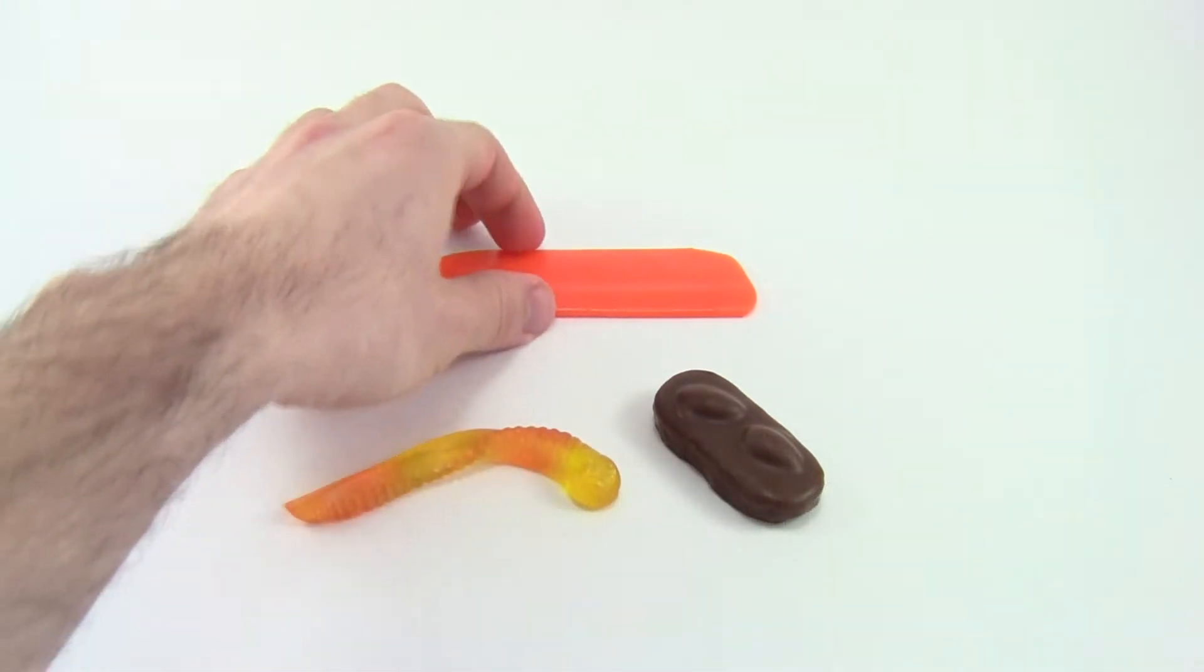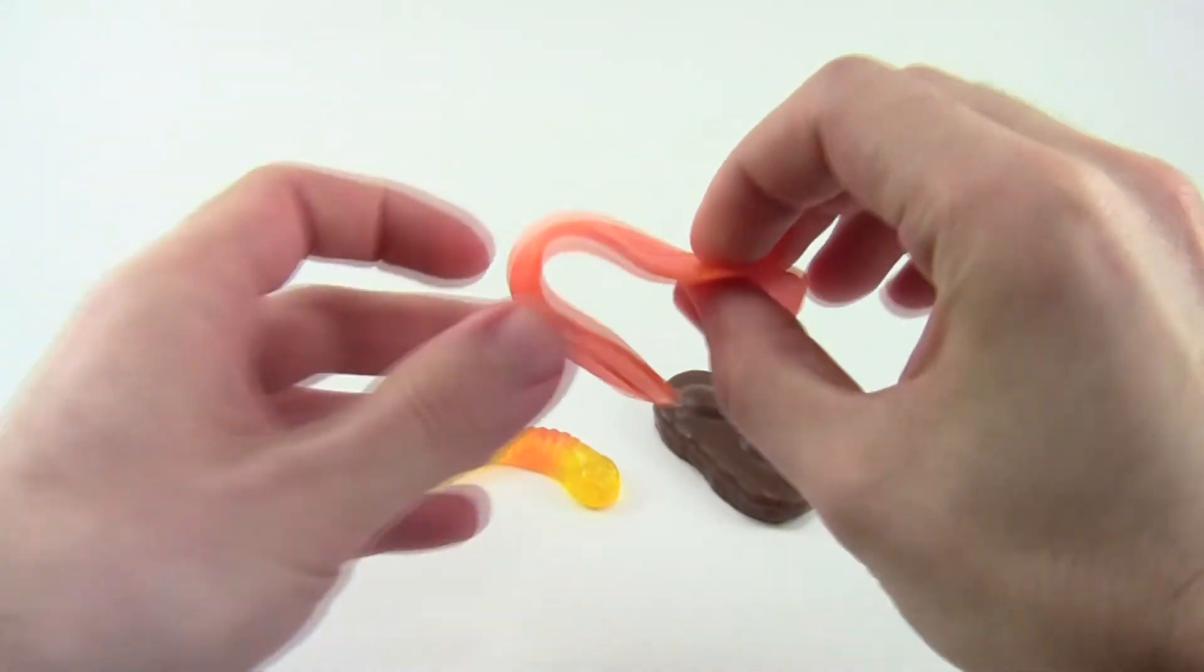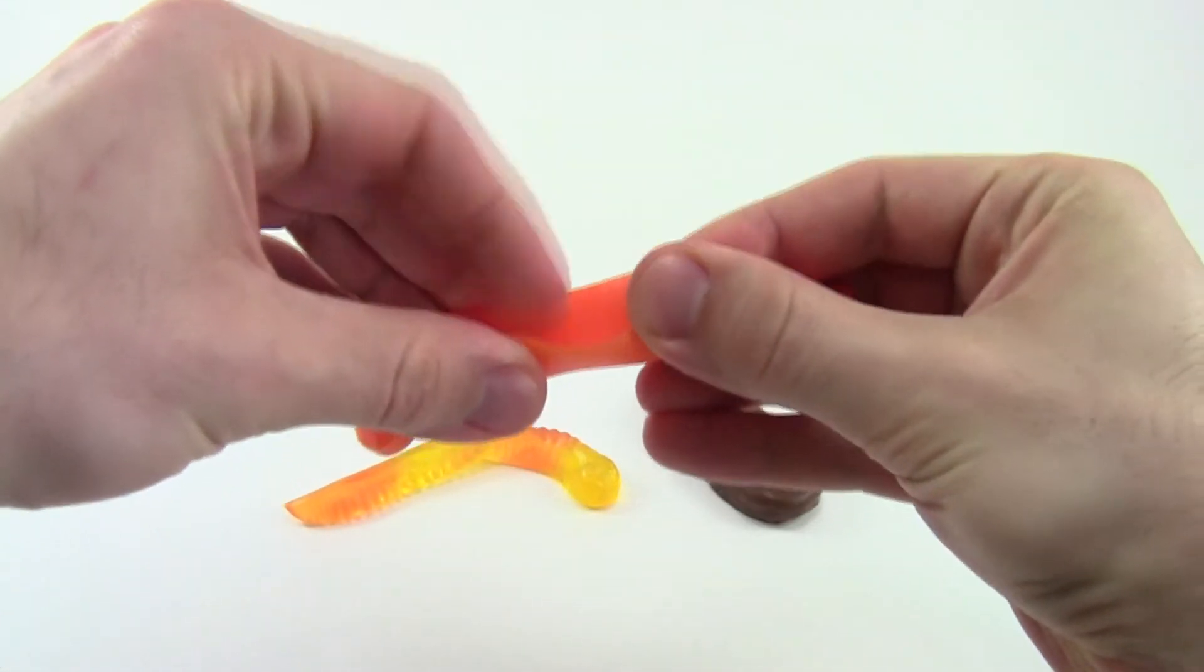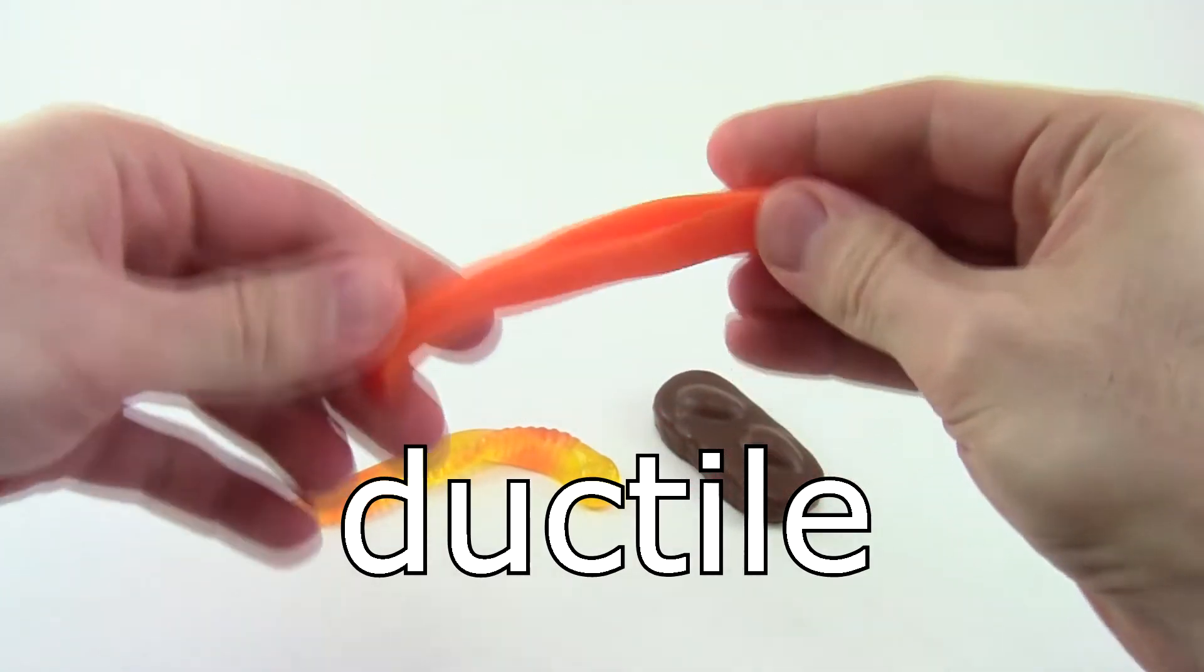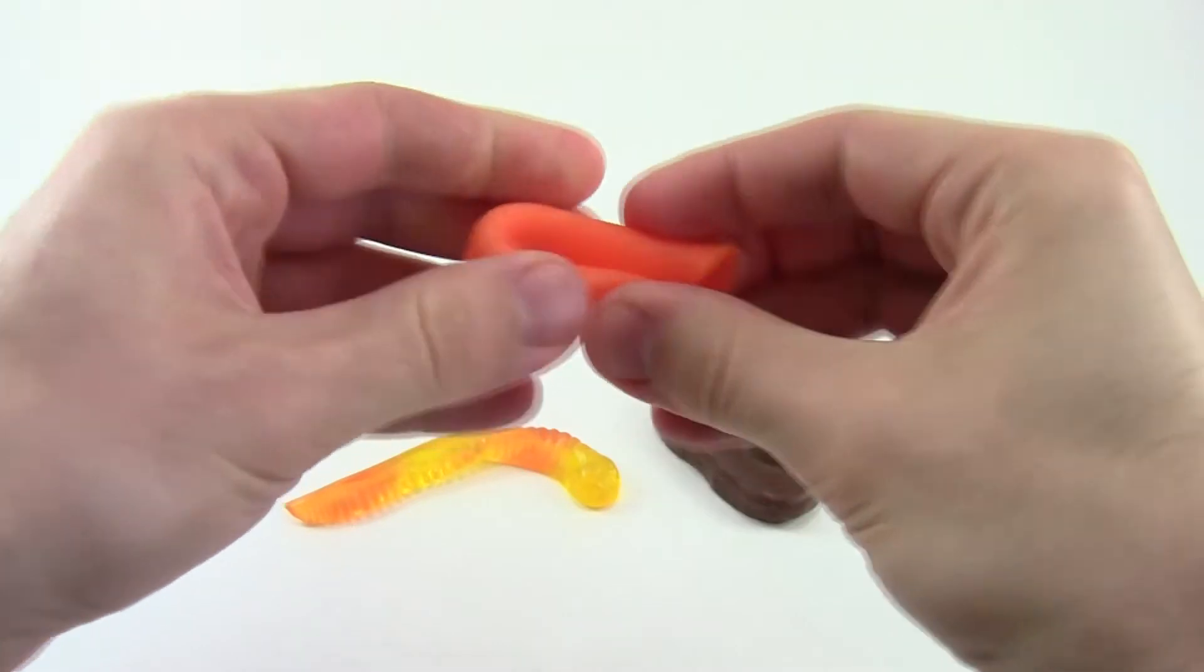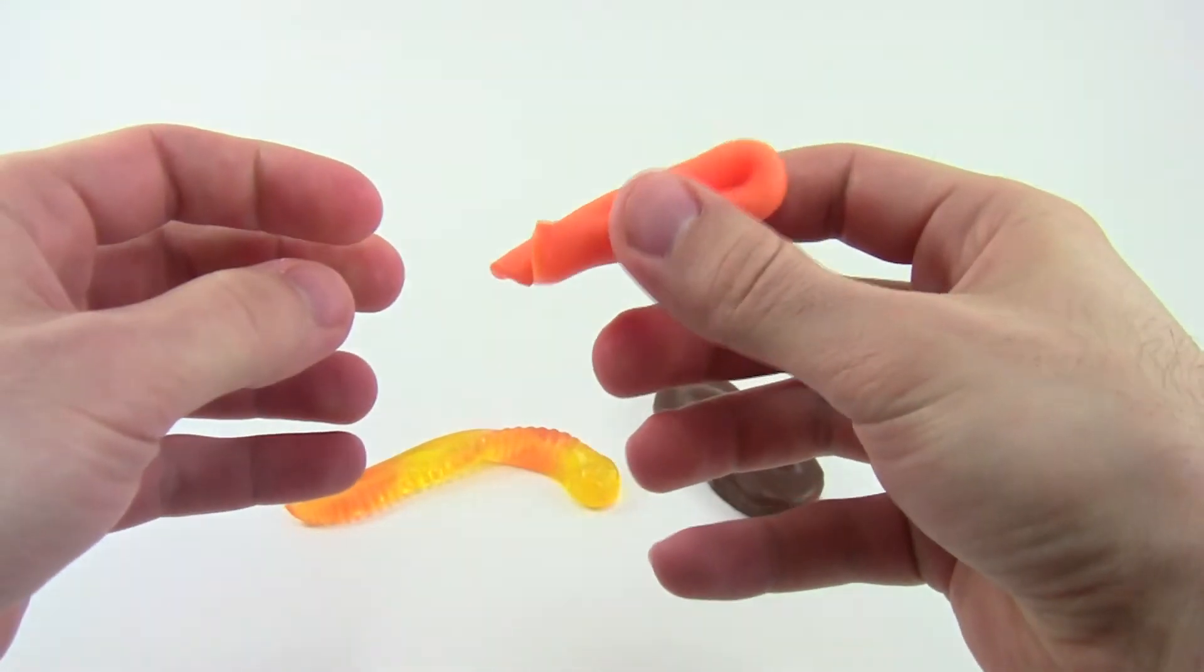Other foods, like this airhead, are very bendable and will actually hold their bent shape once you deform them. This type of material is called ductile, sometimes pronounced ductile, depending on who you ask. And you can bend it and fold it into many different shapes without breaking it, and it doesn't spring back to its original shape.